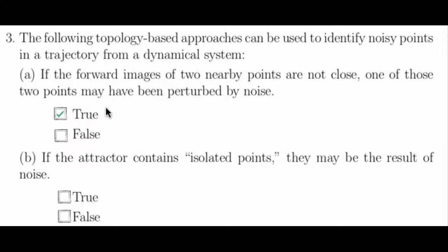For Part B, if the attractor contains isolated points, they may be the result of noise, and this is also true. Attractors, at least the attractors that we're looking at in this course, are connected sets. If you have points that are isolated, that is they're not connected to the rest of the set, this may mean that point is simply perturbed by noise, or that's a noisy point.